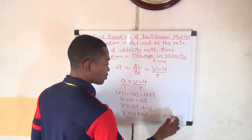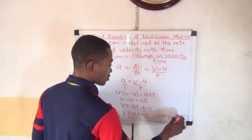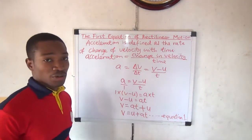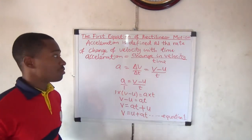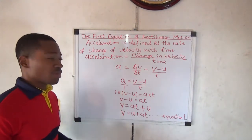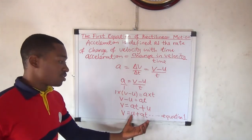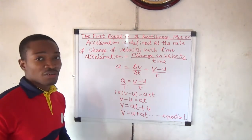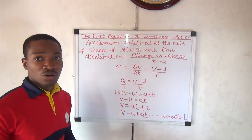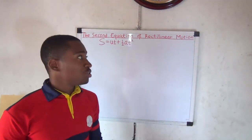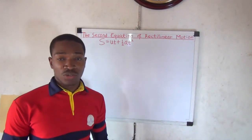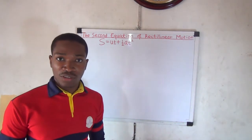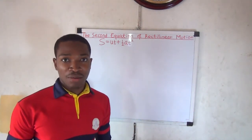This is the first equation of rectilinear motion. Note that AT plus U is the same as U plus AT. Now we derive the second equation. The second equation of rectilinear motion is S equals UT plus half AT squared. Its derivation uses the fact that total distance traveled equals average velocity multiplied by time taken.